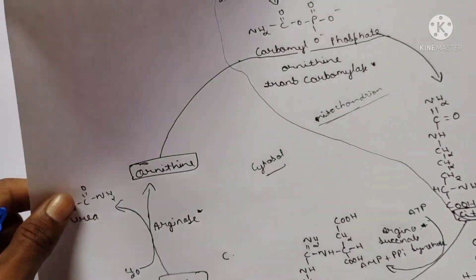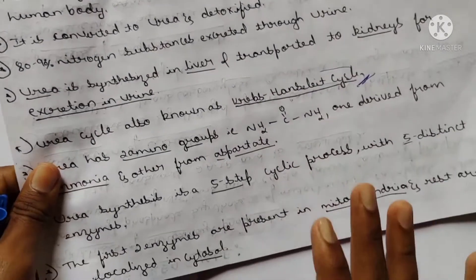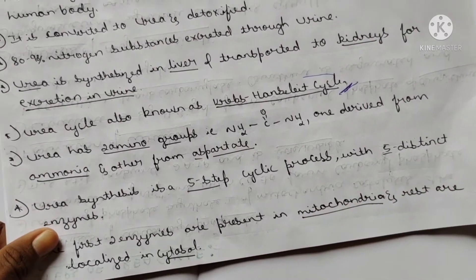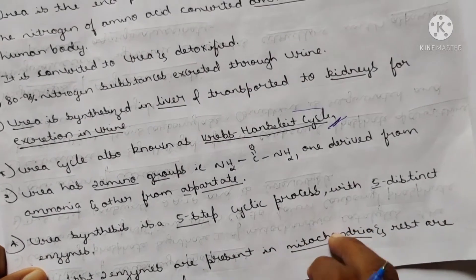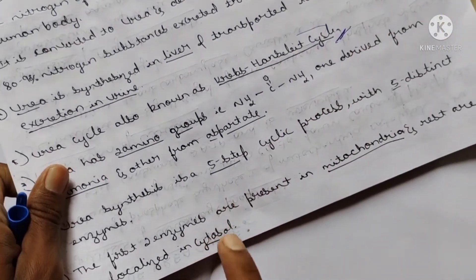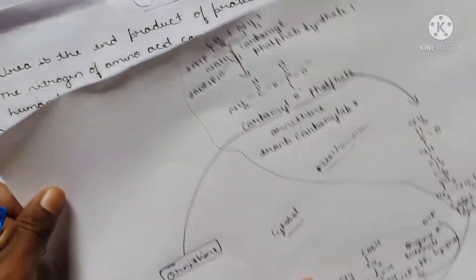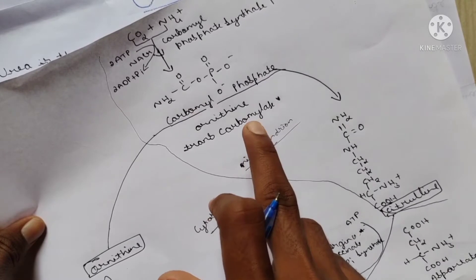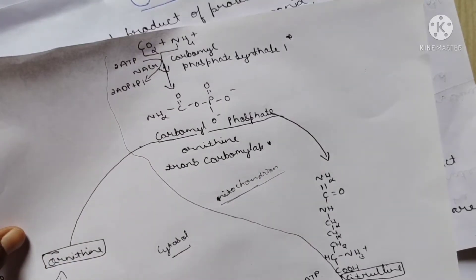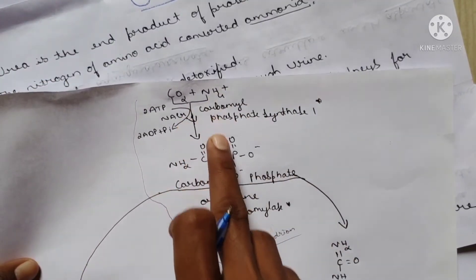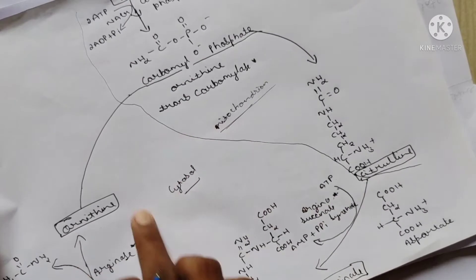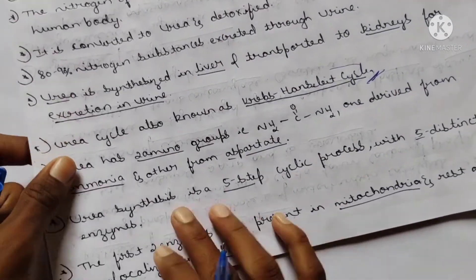The first two enzymes are present in the mitochondria and the rest are present in the cytosol. The urea cycle begins in the mitochondrial membrane as well as in the cytosol. The two mitochondrial enzymes are ornithine transcarbamylase and carbamyl phosphate synthetase. The other three enzymes act in the cytosol.